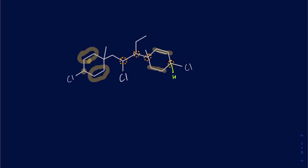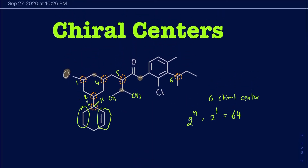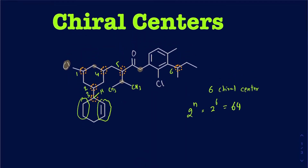So in this particular case I've got a total of four chiral centers. This is how you're going to be figuring out the total number of chiral centers. If you have any questions feel free to leave comments in the section below.